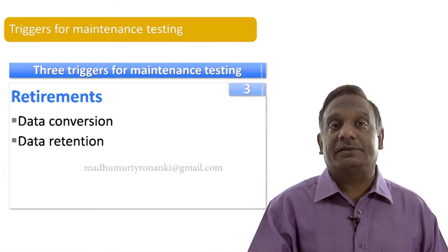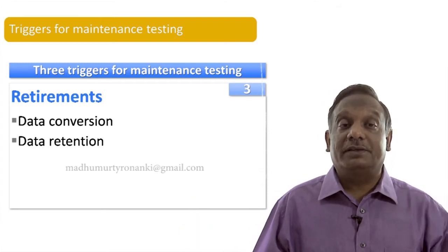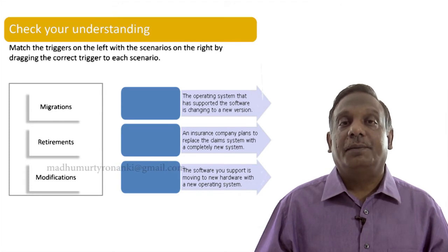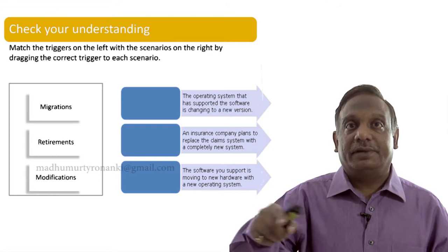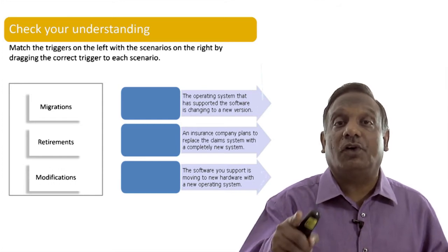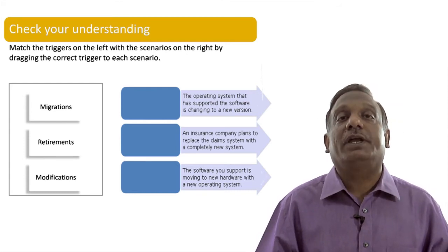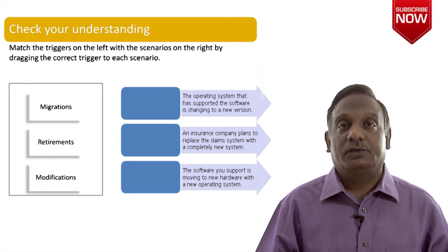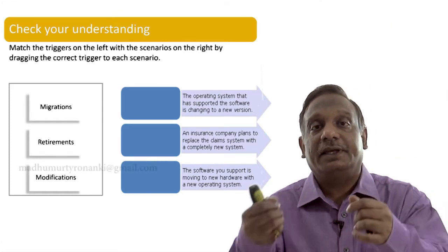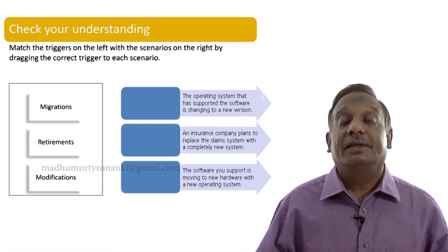So the three triggers are modifications, migrations and retirements. Let us check our understanding of how well we understood these three triggers. On the left side the triggers are listed — migrations, retirements, modification — and on the right side there are some situations. Move the right trigger to match the right-hand side situation. The first one: the operating system that has supported the software is changing to a new version. The software is running on a particular operating system and the OS vendor released a new version. This will trigger maintenance testing, and the trigger is modification — a modification is happening to the environment of the software.